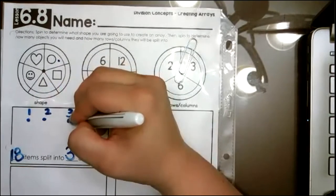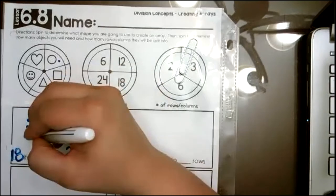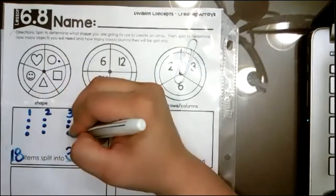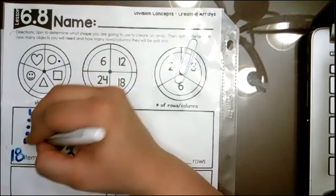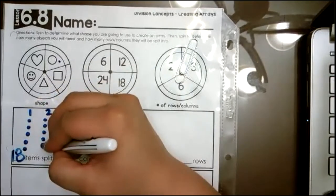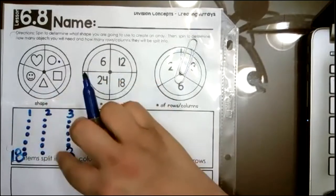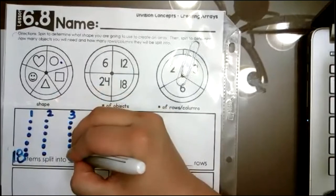So I'm going to go ahead and count out until I get 18. One, two, three, four, five, six, seven, eight, nine, ten, eleven, twelve, thirteen, fourteen, fifteen, sixteen, seventeen, and eighteen.